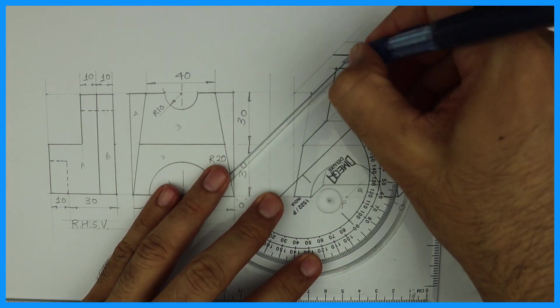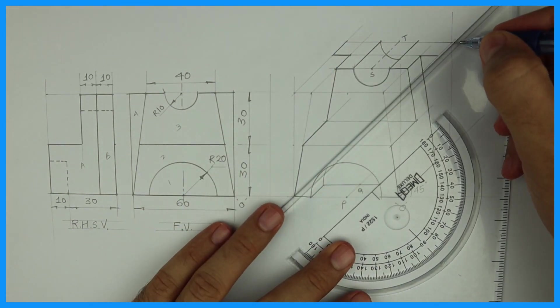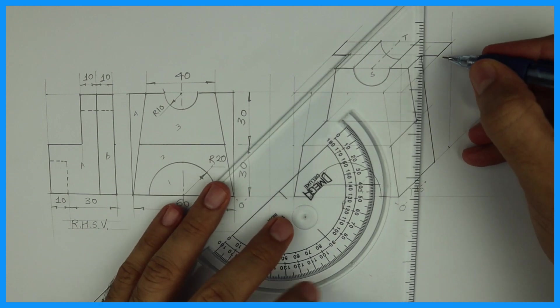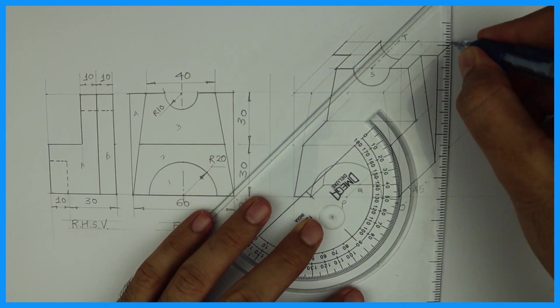This will be dark. This will be dark. Same way these two will be also dark. Then join straight line, we will get that part. Part 4.